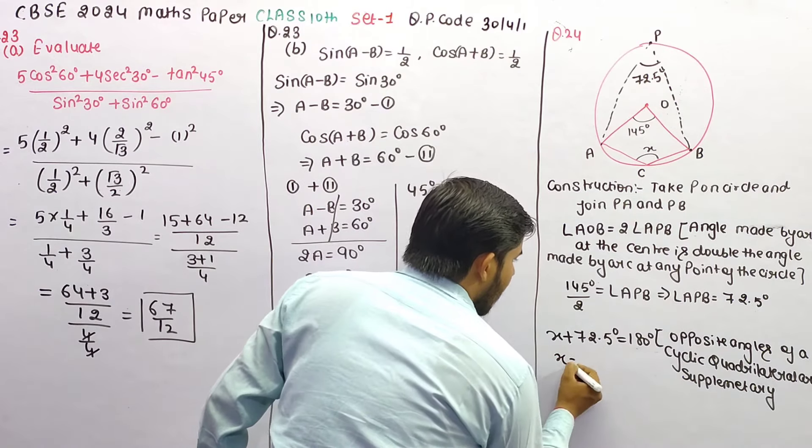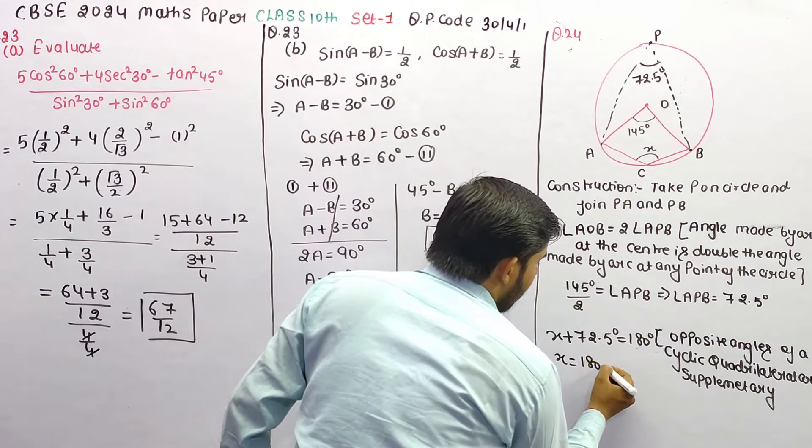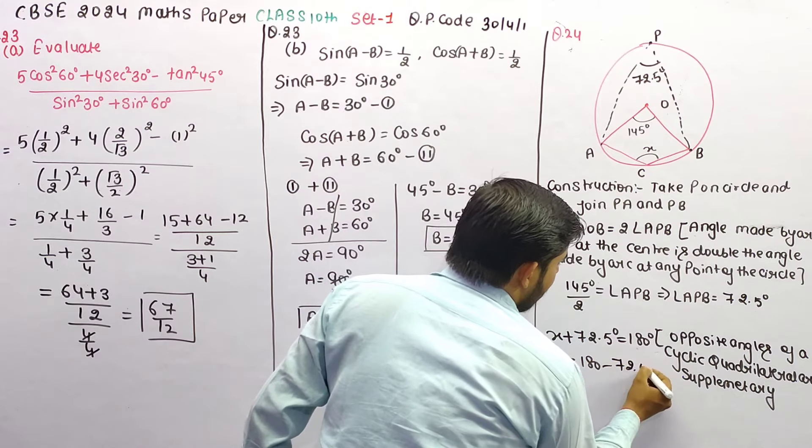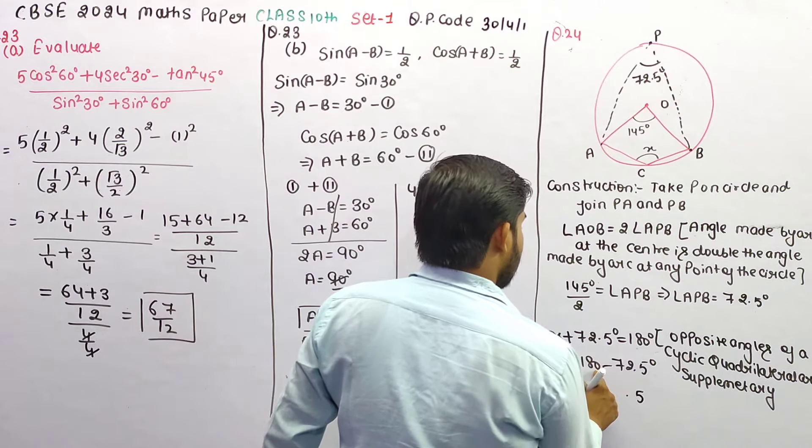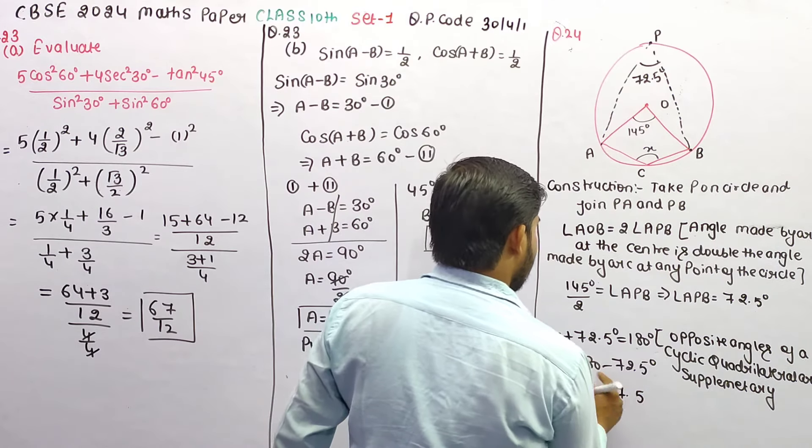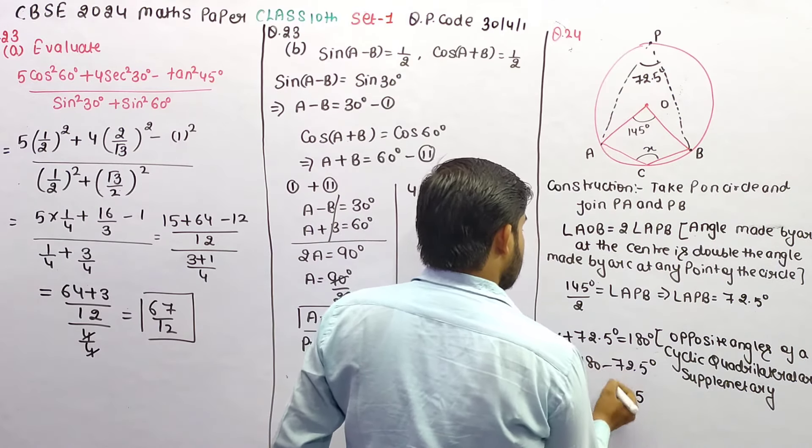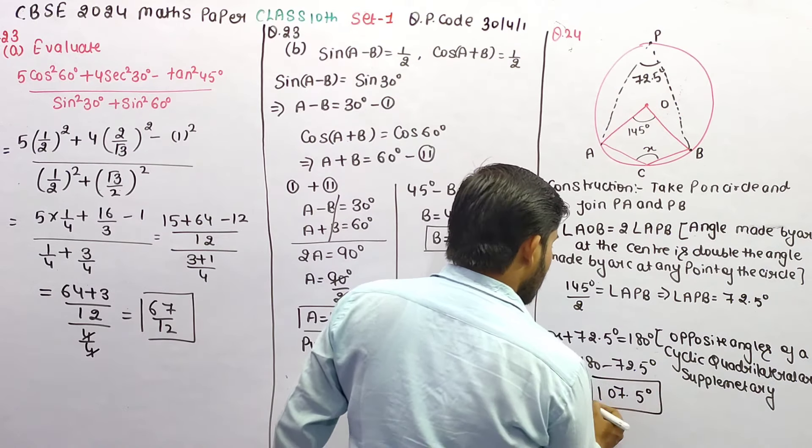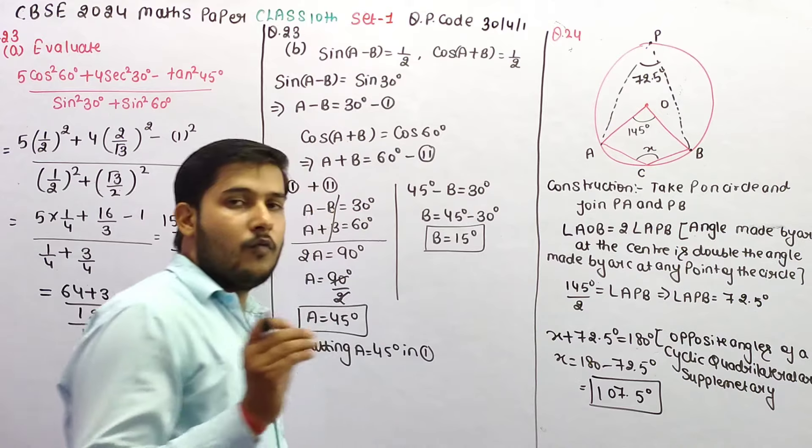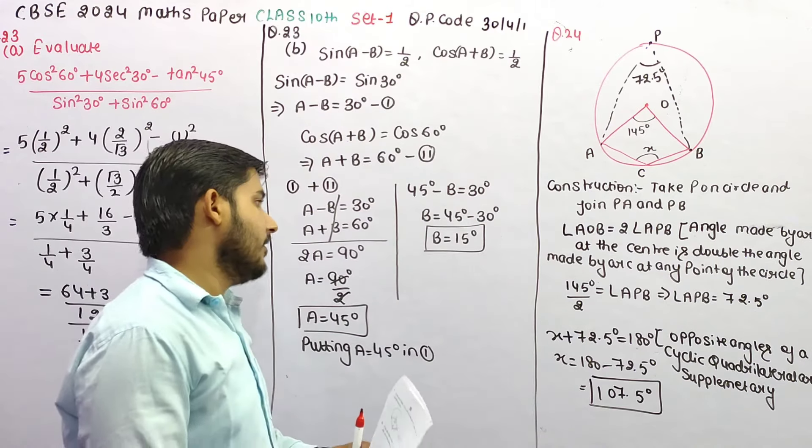X is equal to 180 minus 72.5 degree. Subtracting, 0.5, 9 minus 2 is 7, and here 7 minus 7 is 0, giving 107.5 degree. So the value of X is 107.5 degree.